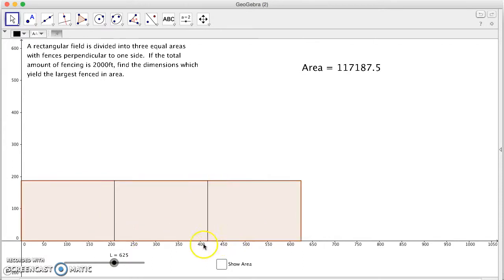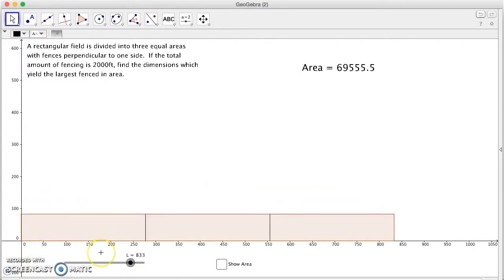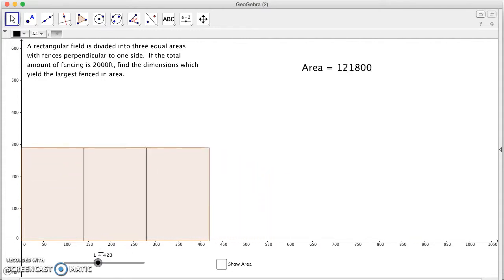Now I've set it up so that as I move this slider that controls the length of the field this way, what happens is that it automatically calculates the width to keep the perimeter at 2,000. And of course, we can go ahead and animate that, and you'll see that there's going to be some fields that are better than others, right? Somewhere around there looks optimal.